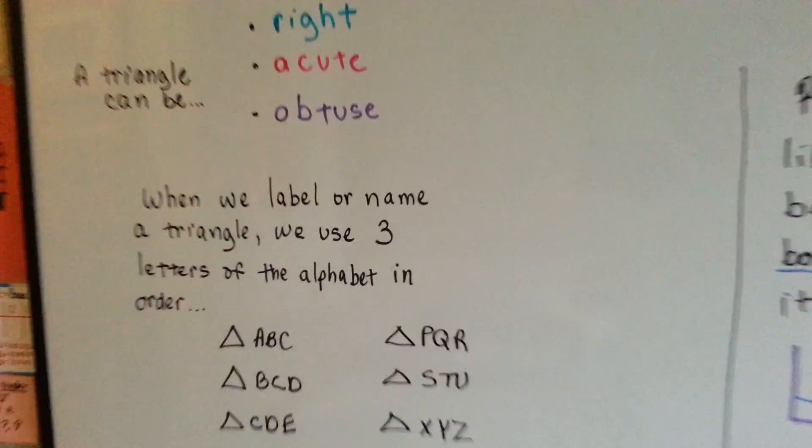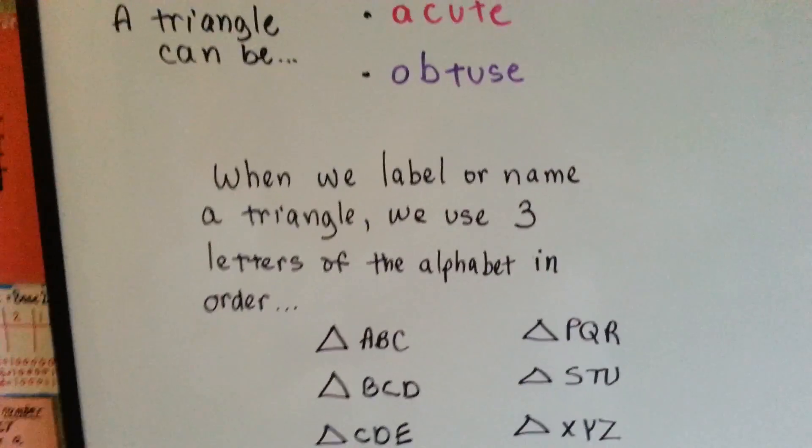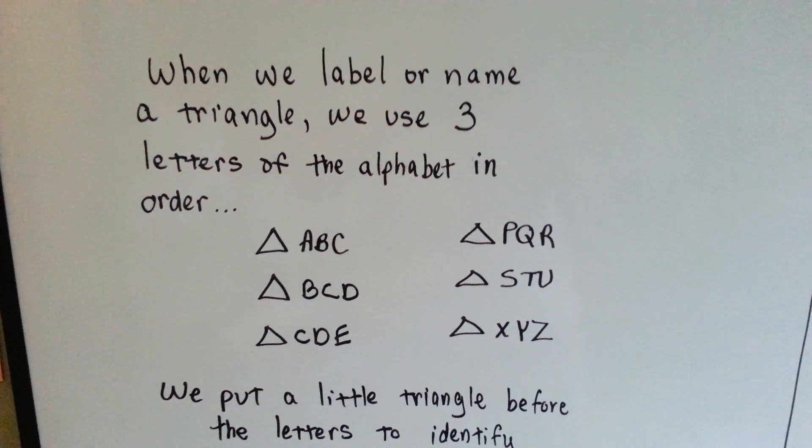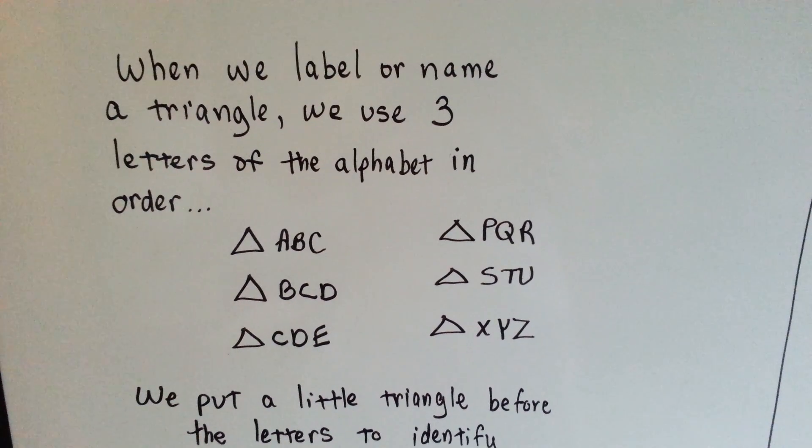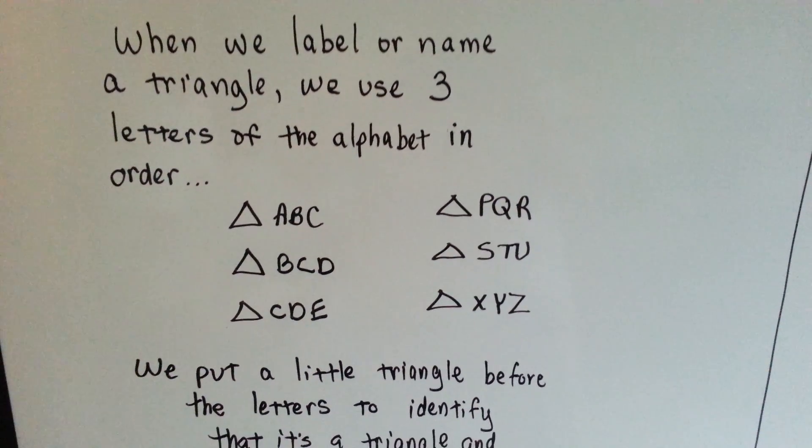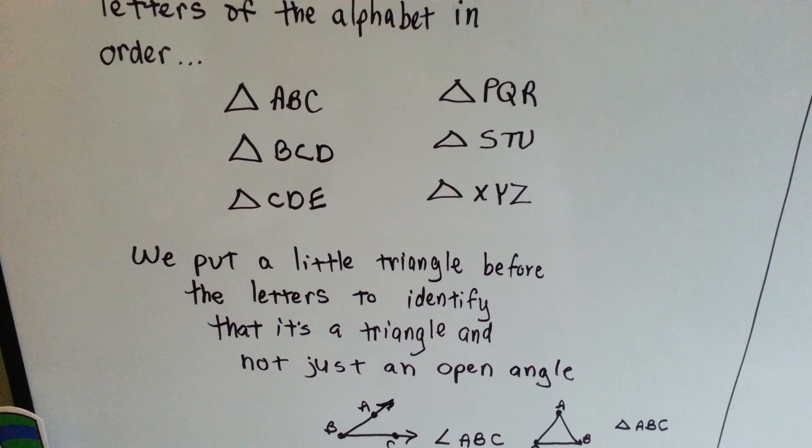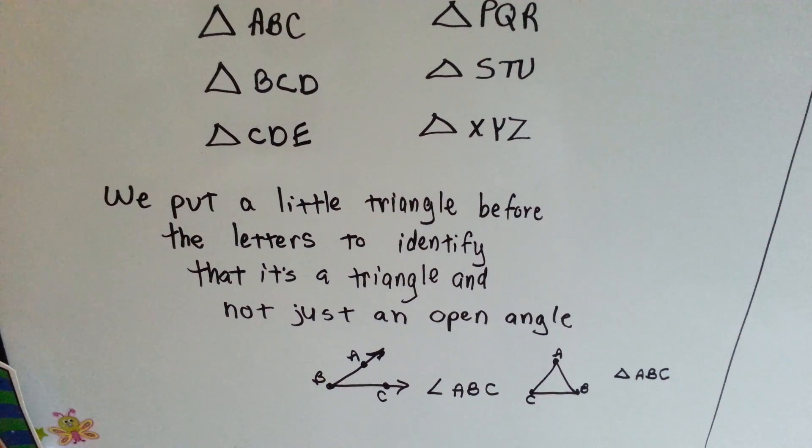When we label or name a triangle, we use three letters of the alphabet in order, like ABC, or BCD, or CDE, PQR. We put a little triangle before the letters to identify that it's a triangle and not just an open angle.